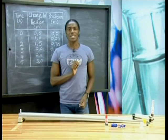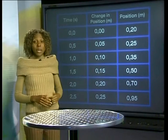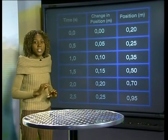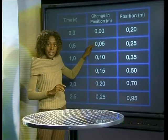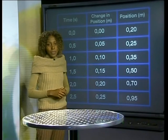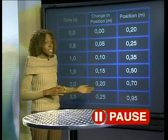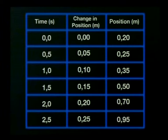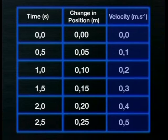Now that we have our results, let's cross back to Nelly and analyze them. Here is the completed table of results for the trolley going downhill. In the first half second, the trolley changed position by 0.05 meters. In the next time interval, the trolley was displaced by 0.1 meters. The change in position is clearly increasing. Remember that velocity is the change in position per unit time. Can you calculate the velocity for each of the five half-second time intervals?